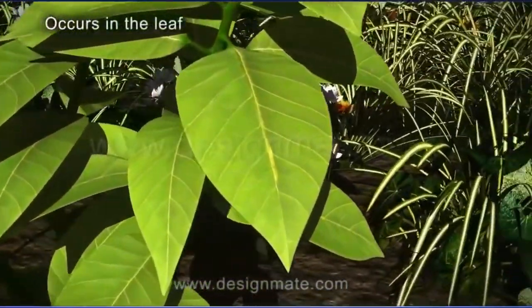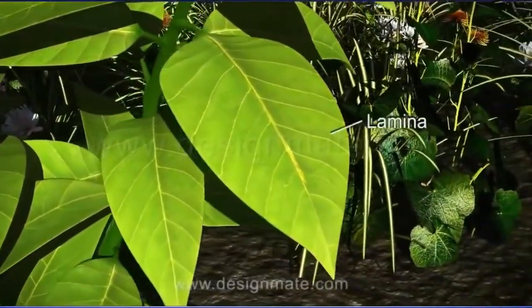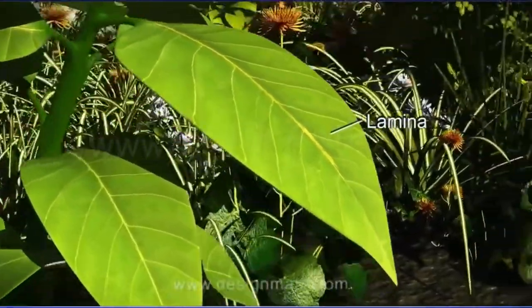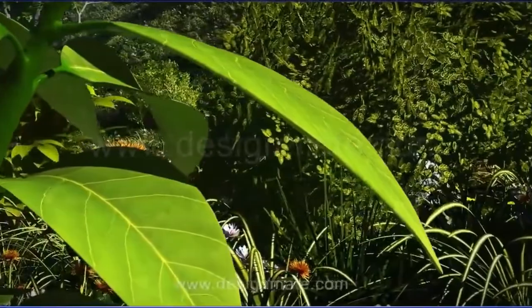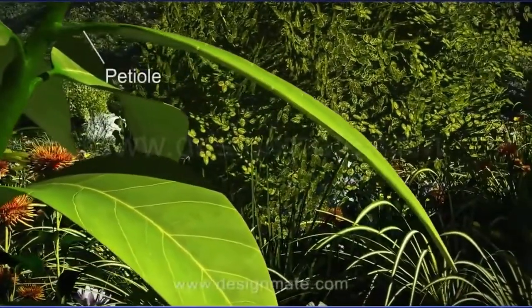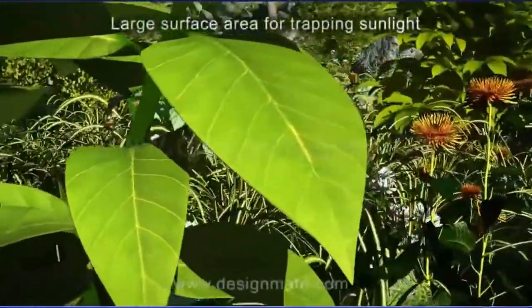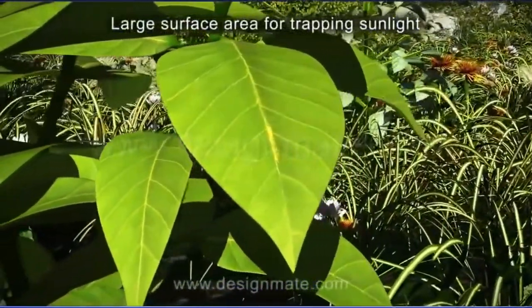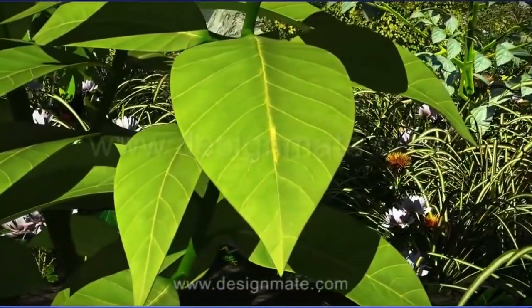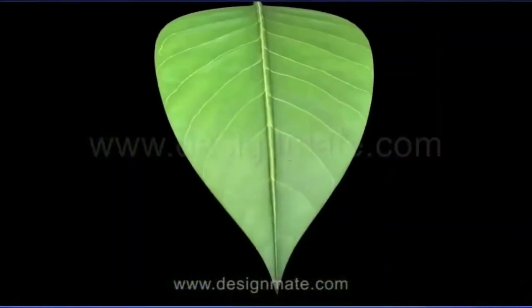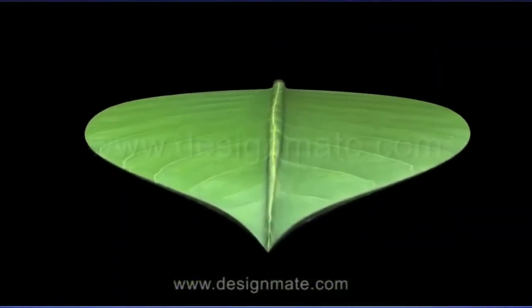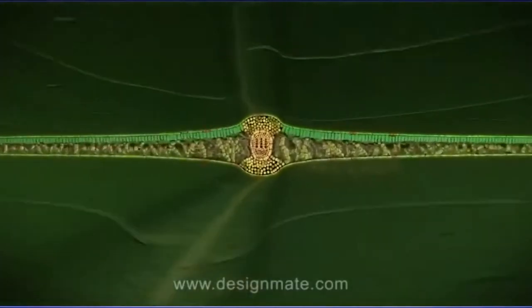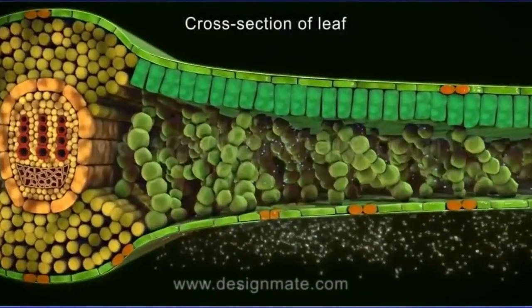A leaf consists of a flat thin lamina which is joined to the stem by a petiole. The flattened lamina provides large surface area for trapping sunlight. A cross-section of the leaf shows the upper and lower layers of cells which are flat and irregular.